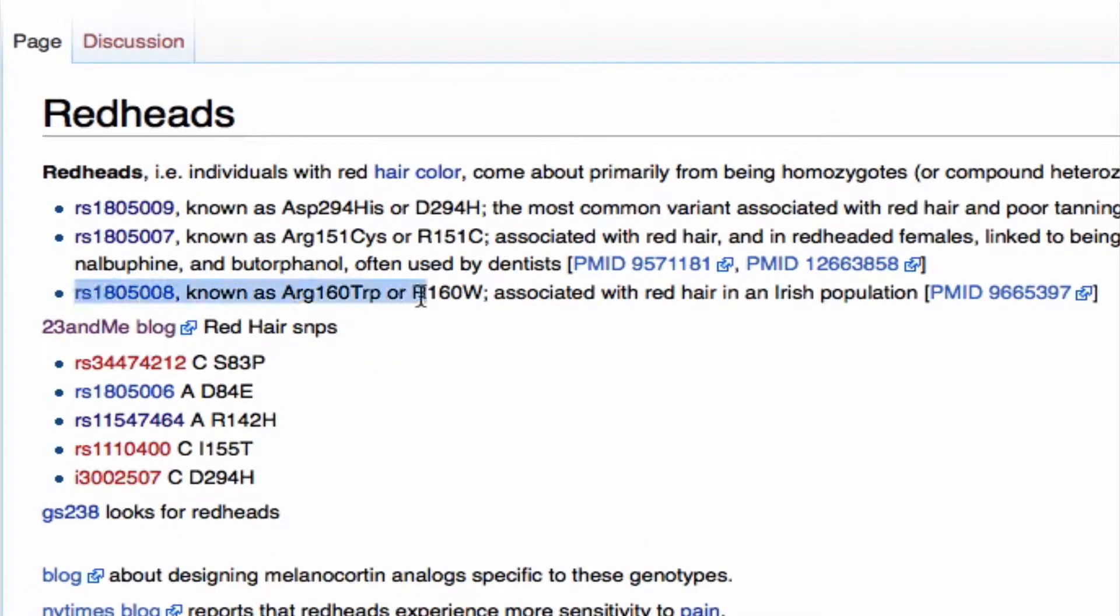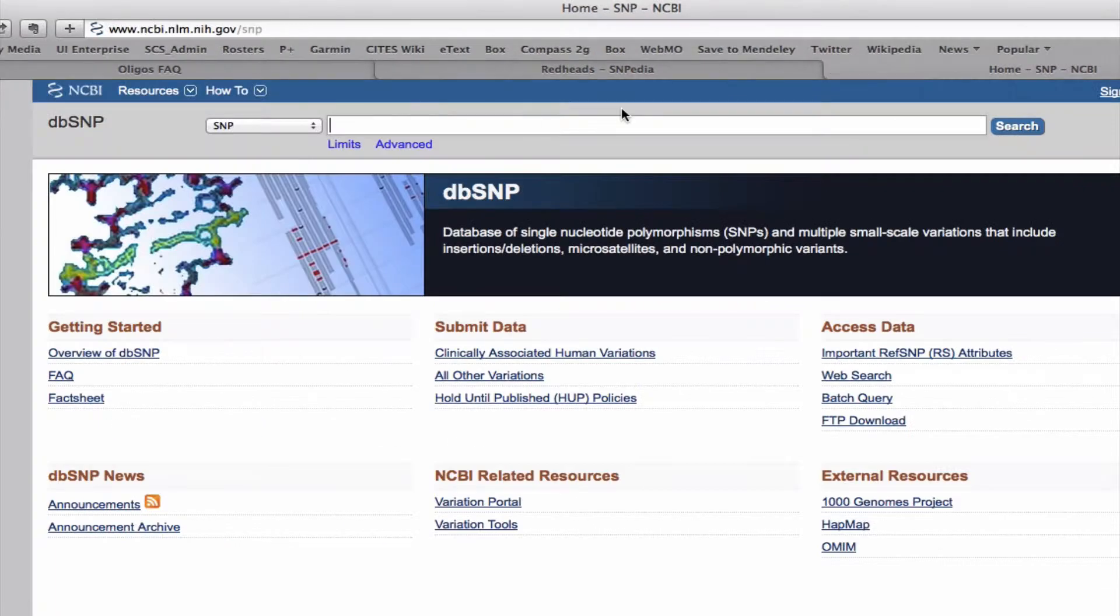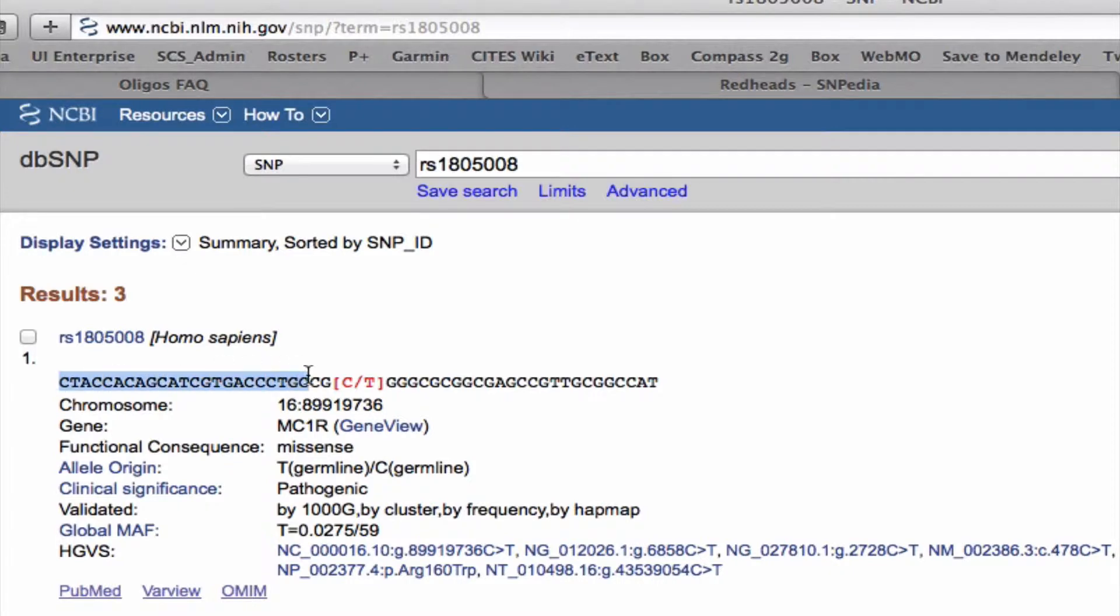And if you just type that in Google, go to SNPedia, you'll end up with this RS number that corresponds to SNPs that are associated with Irish redheads. And there's the sequence. And CT in red brackets represents the SNP. You can find this in 23andMe data.